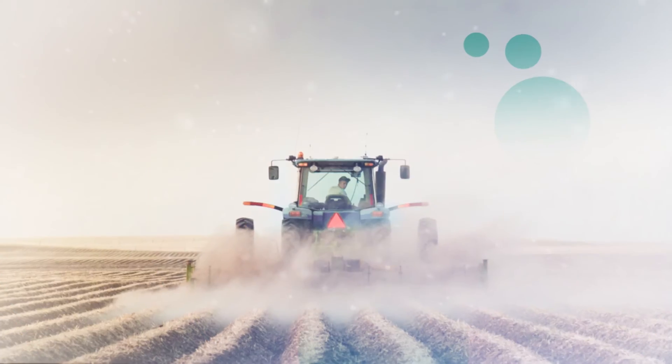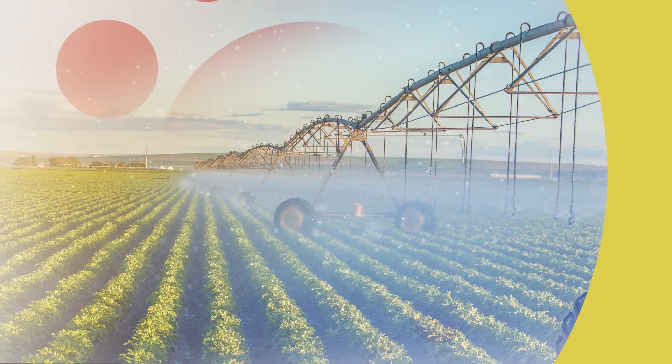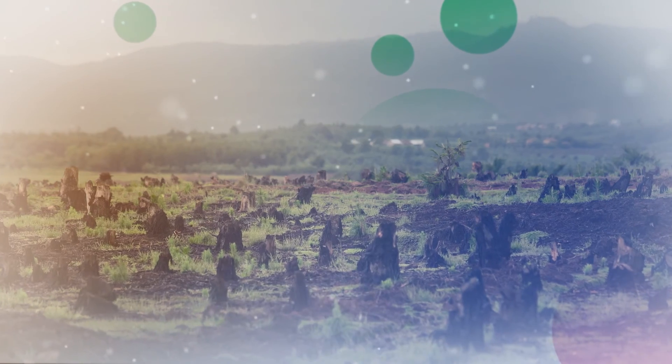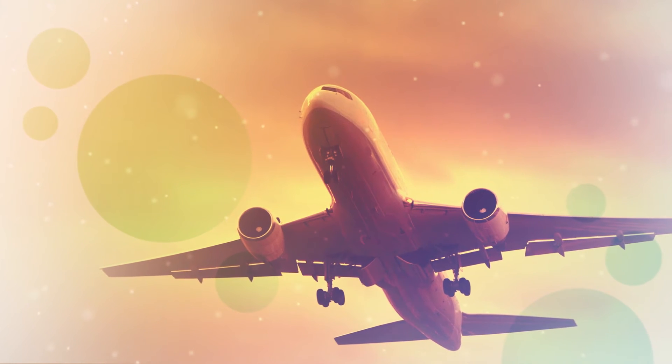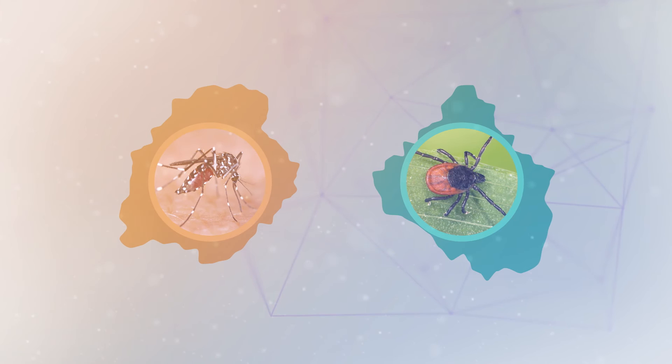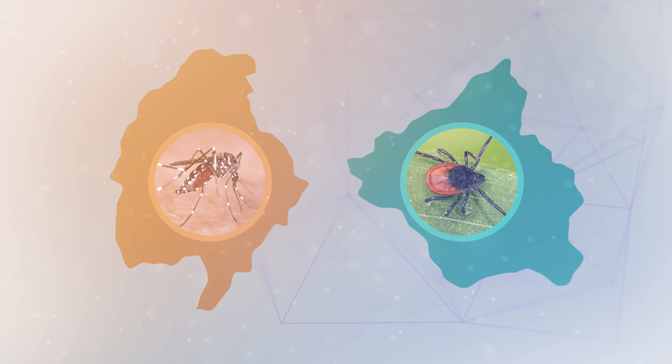According to a study published by the World Health Organization in 2015, the global geographic distribution of vector-borne diseases is changing rapidly due to factors such as climate change, intensive farming, dams, irrigation, deforestation, population movement, rapid unplanned urbanization, and increases in international travel and trade. There is evidence that the geographic range of ticks and mosquitoes that carry disease has changed in response to climate change.